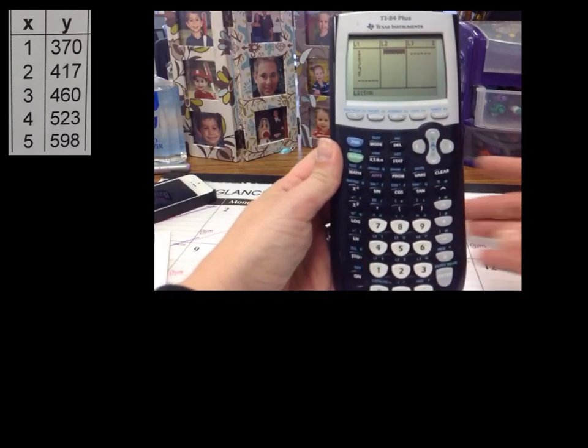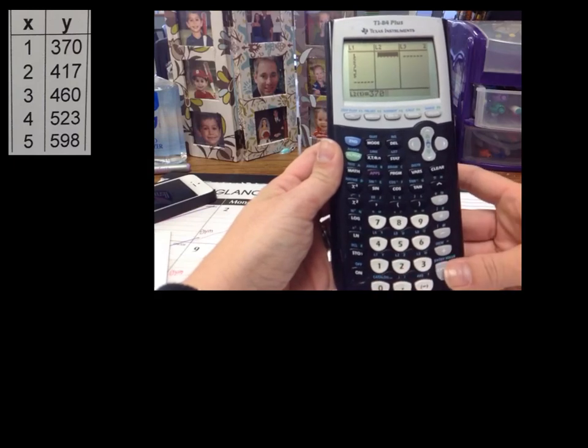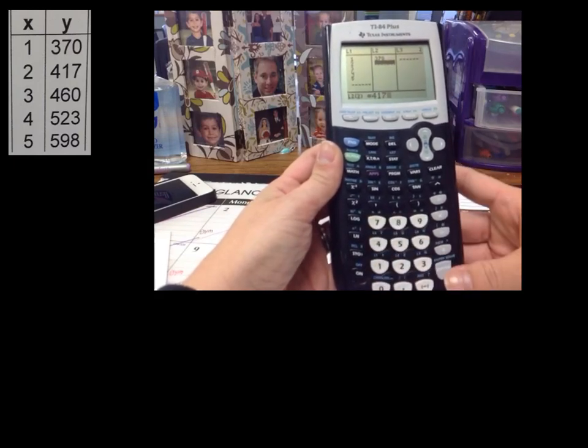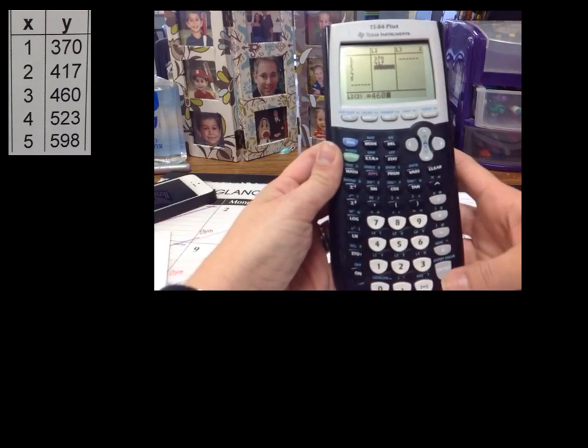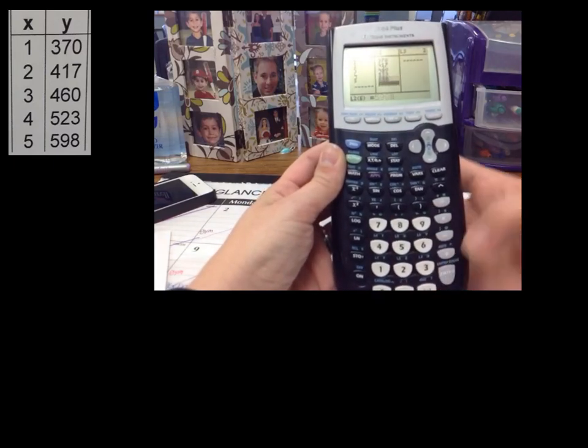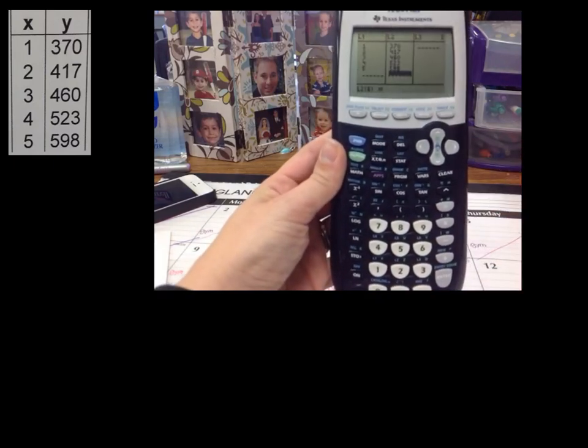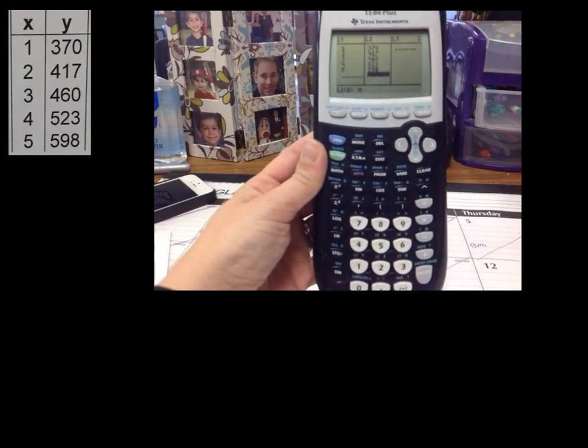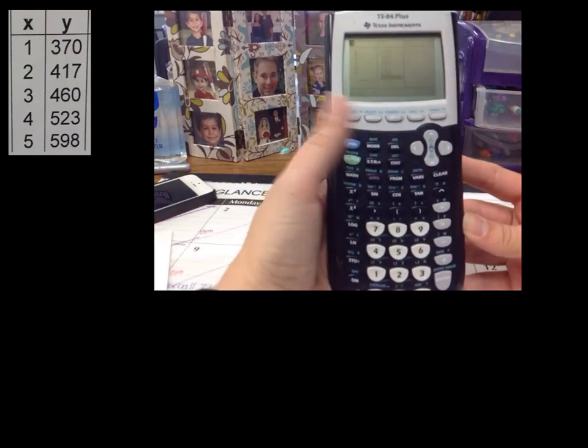In list 2, we're going to put the y's. So 370 and 417 and 460, 523 and 598. I know this is boring for some of you, but some of you need it step by step. All right, now that we've got all these in here, we have to second quit.